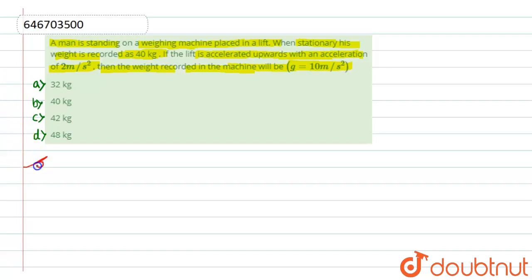So let's see the solution here. First of all, let's understand the situation. Initially the lift was at rest, means it will be at ground. In this case, obviously we can say that the acceleration will be zero.